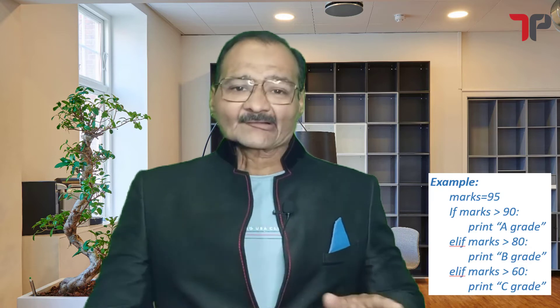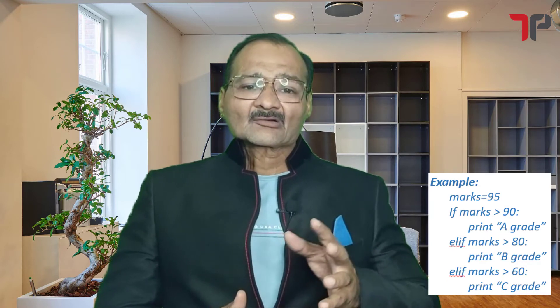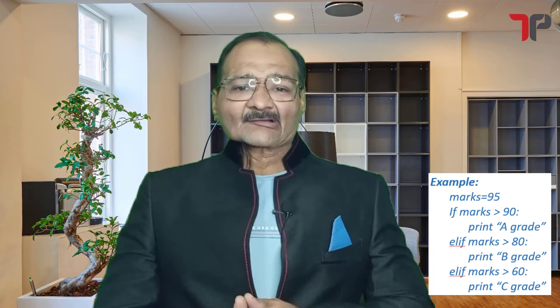Now, if marks is not greater than 90, then the second condition, elif marks greater than or equal to 80, will be evaluated. In this case, Python will print B grade. Similarly, if marks are less than 80, the next elif condition will be evaluated to check if the marks are greater than or equal to 60. There can be any number of elif statements.